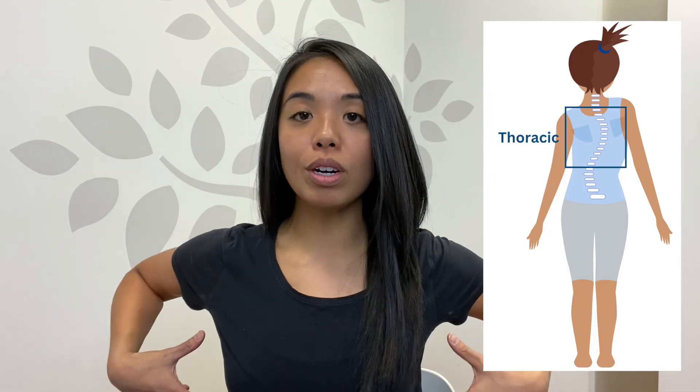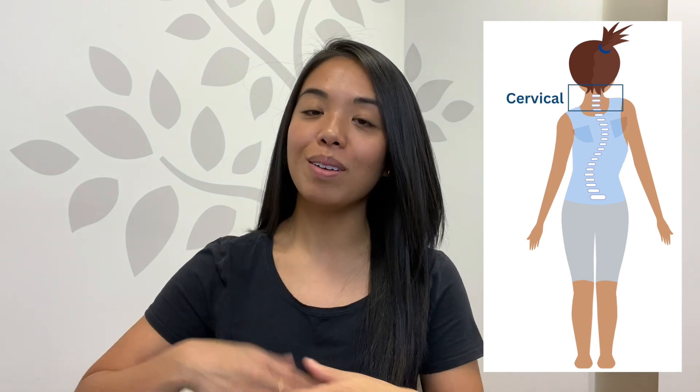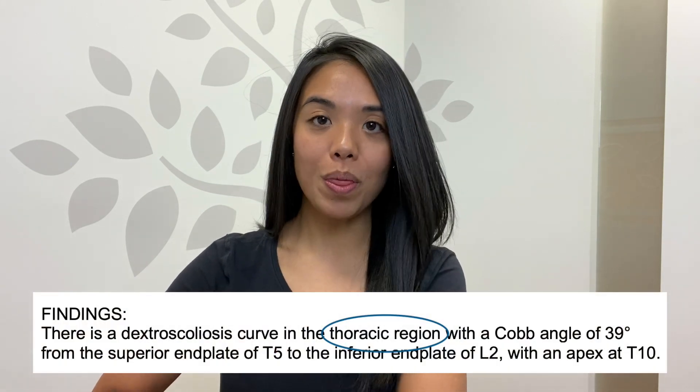Somewhere in the report it will indicate the region of your spine where your curve is located. Some people already know because they can see themselves physically in the mirror, and some people don't know where their curve might be. There are three main regions of the spine: the lumbar, the thoracic, and the cervical. The lumbar region is your lower back, the thoracic is your mid-back where all your ribs are attached, and the cervical refers to your neck area. Some people have multiple curves, so you may see more than one region listed.